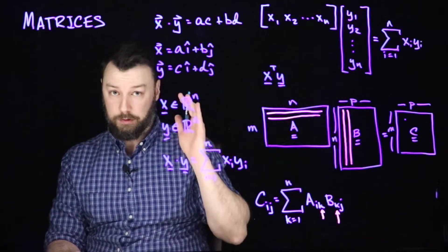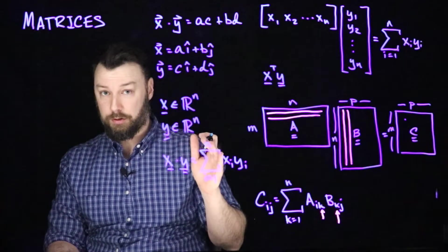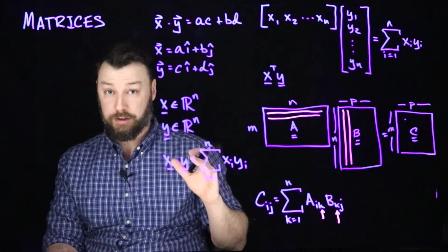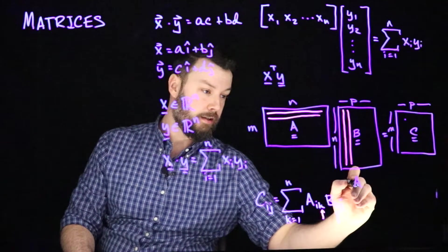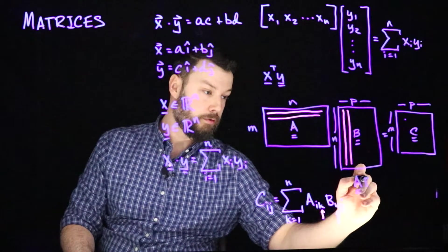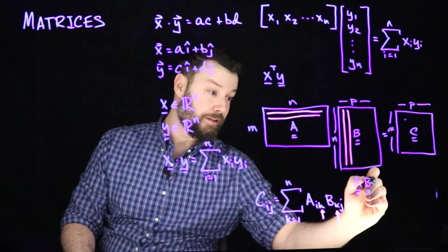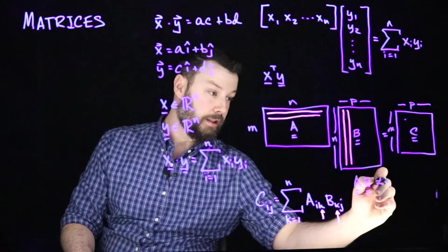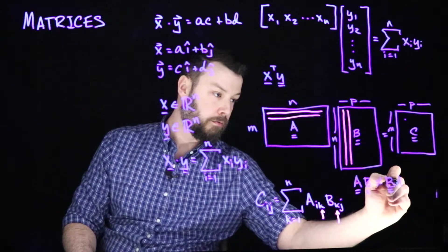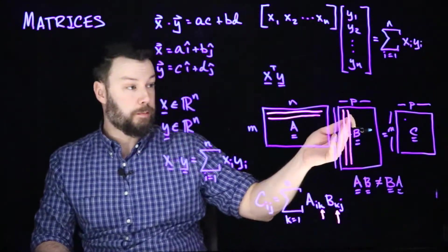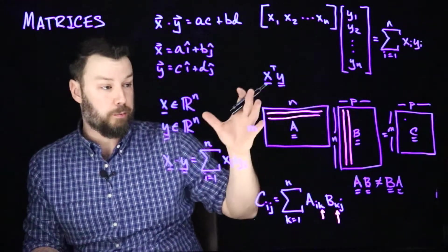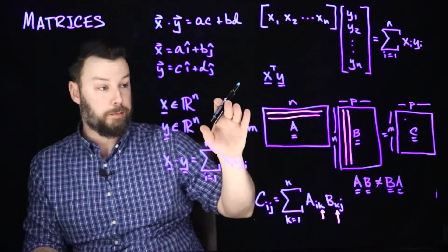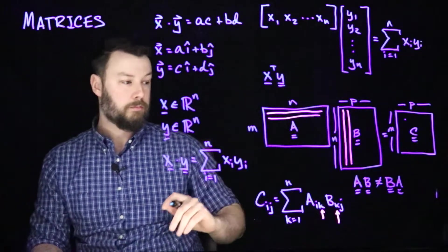Some key properties to be aware of. The first one is that in general, matrix multiplication does not commute. So that is to say that if I have A multiplied by B, that in general does not equal B multiplied by A. And in fact, in this simple example here, you can see that the dimensions wouldn't even make sense because the inner dimension would be M and P.